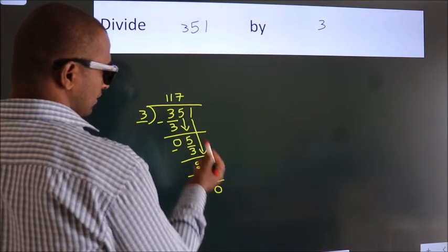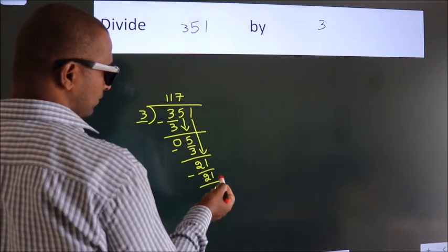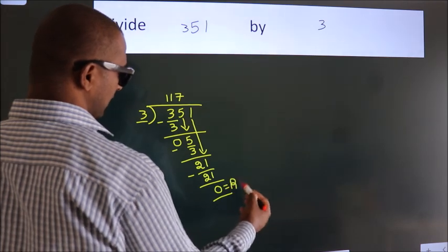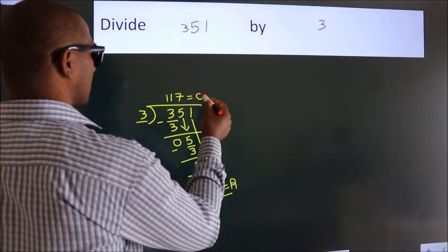After this, no more numbers to bring it down. So we stop here. This is our remainder. This is our quotient: 117. Thank you.